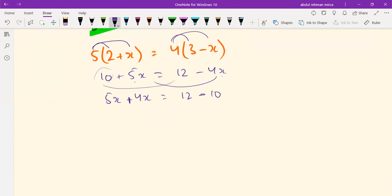5x plus 4x equals 9x, and 12 minus 10 equals 2, so 9x equals 2.